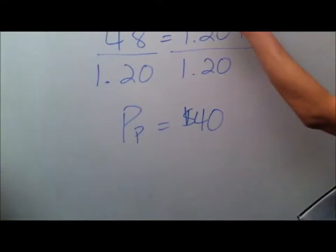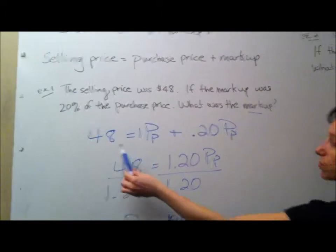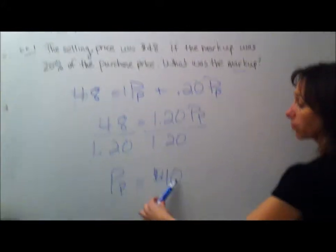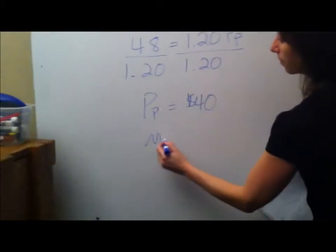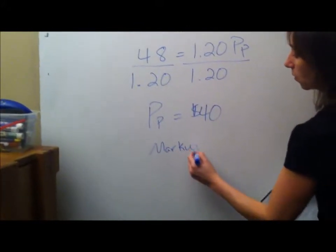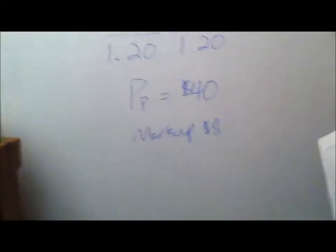But the question, if you go back up here, what was the markup? So the selling price is $48. If the original price was $40, the markup would be $8. So make sure you get what they're asking for.